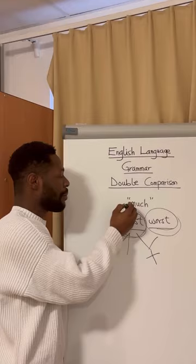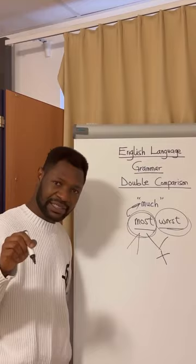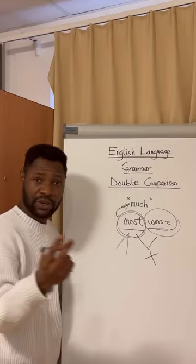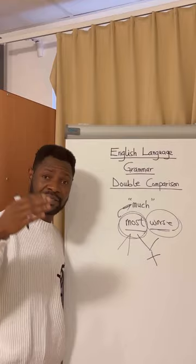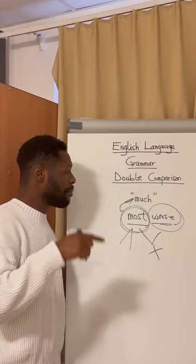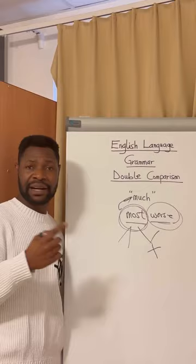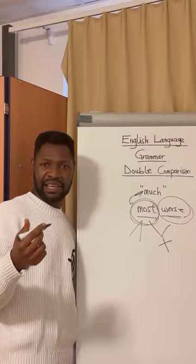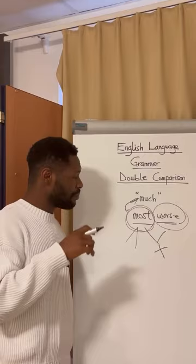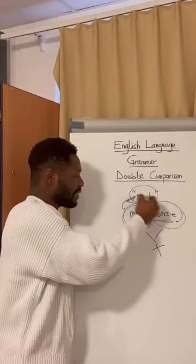So instead of using 'most', you go for 'much'. I can say that Graham Potter is much worse than Tucker — I'm comparing two people here. But when comparing more than two, comparing all the Chelsea managers, then I can say Graham Potter is by far the worst. And so instead of saying 'more prettier', I would say 'much prettier'. You use 'much' instead of 'more' or 'most' in addition to the comparative or the superlative. And that is about the rectification of the double comparison that arises.